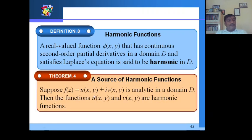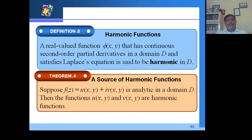Suppose f(z) = u(x,y) + i·v(x,y) is analytic in a domain D. Then the functions u(x,y) and v(x,y) are harmonic functions. This means if a function is analytic in a domain, its real and imaginary parts are harmonic functions. Note that the converse is not necessarily true.